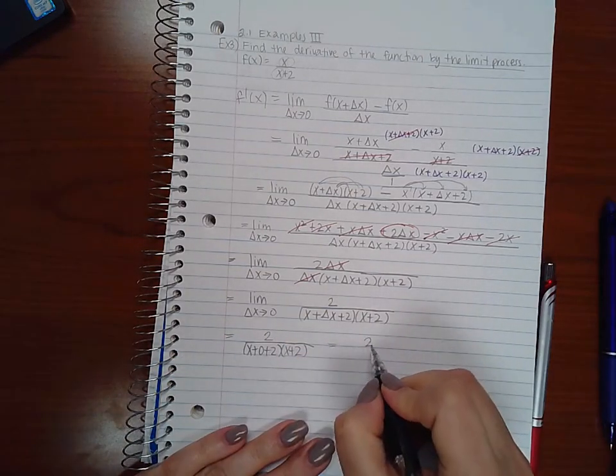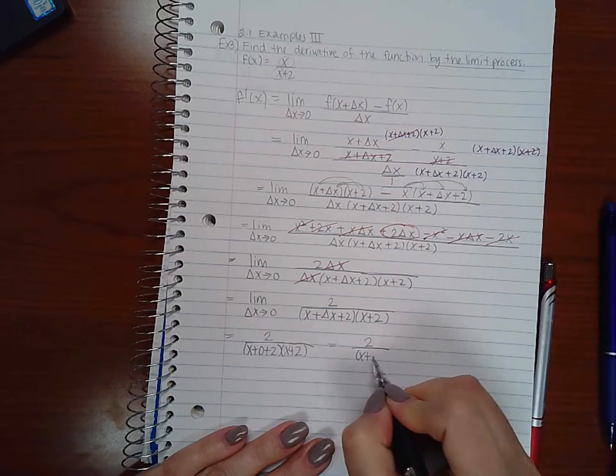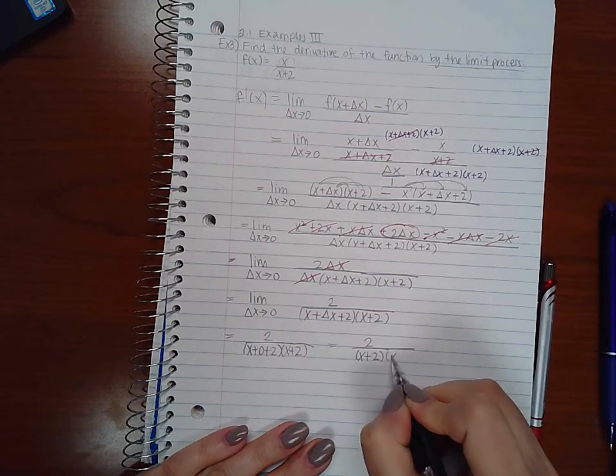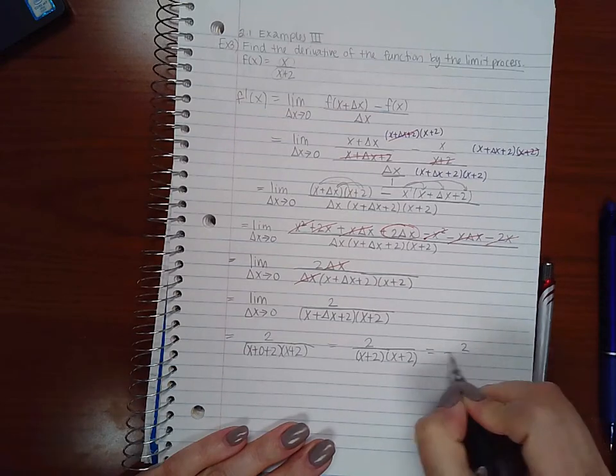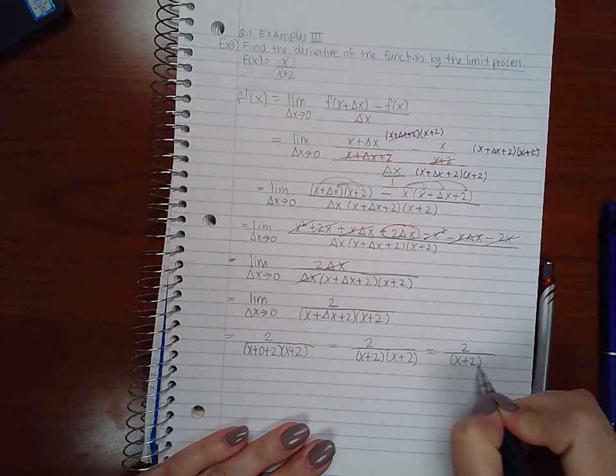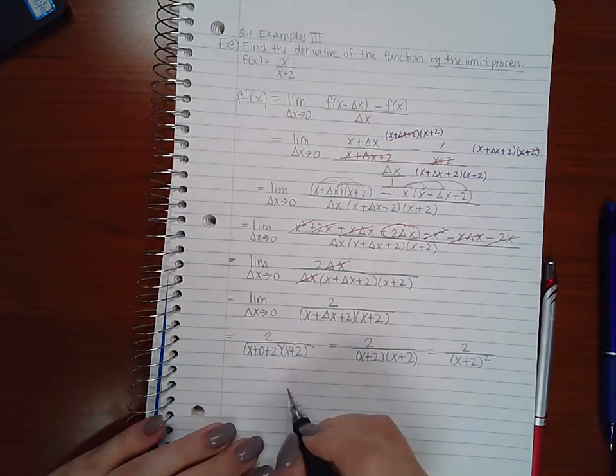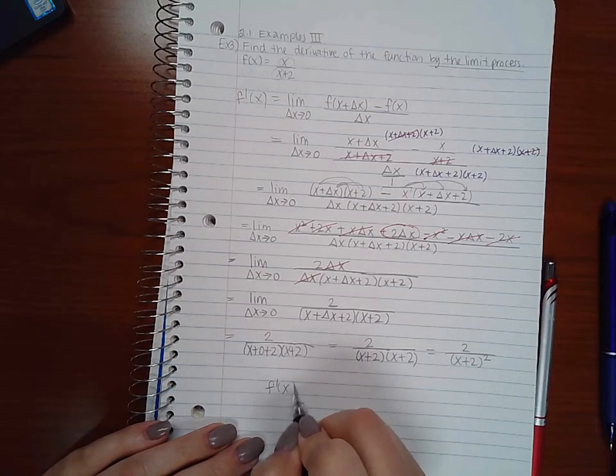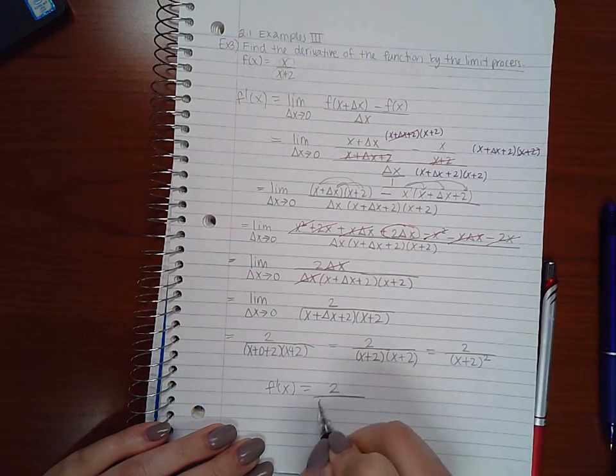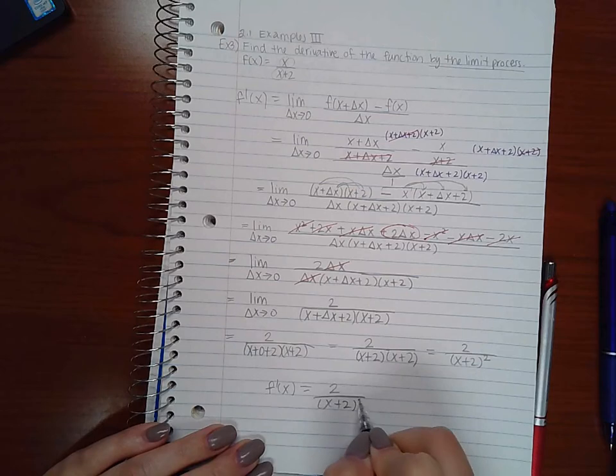Which means I get 2 over x plus 2, x plus 2, which is the same as saying x plus 2 squared. So my derivative, my f prime of x, is 2 over x plus 2 squared.